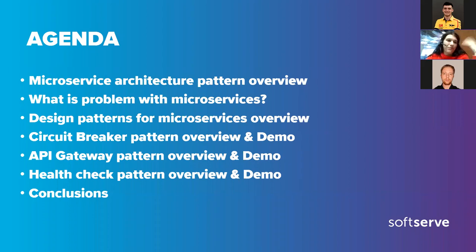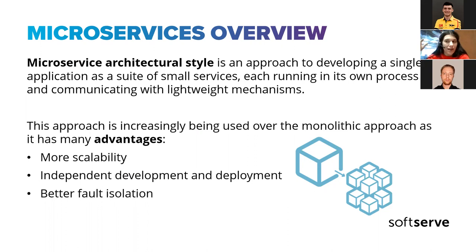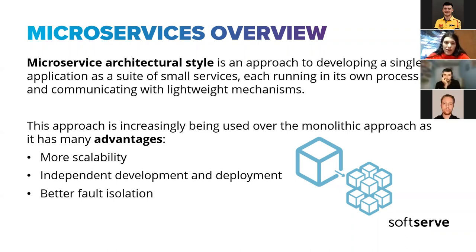Microservices architecture is very popular nowadays in the Java world and beyond. It's an approach to developing a single application as a suite of small services, each running in its own process and communicating with lightweight mechanisms. We have two types of communication in microservices: synchronous, where we use HTTP, and asynchronous, where we use a message broker like RabbitMQ.